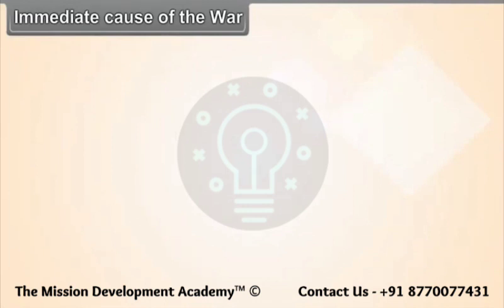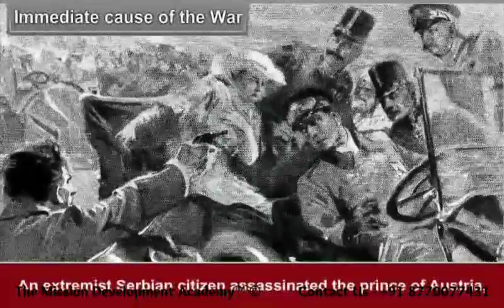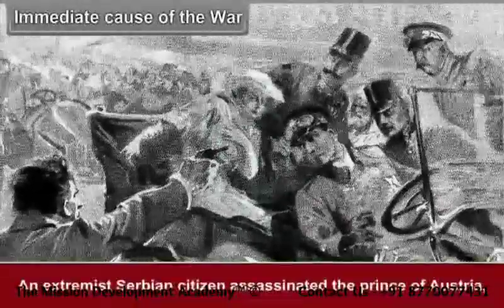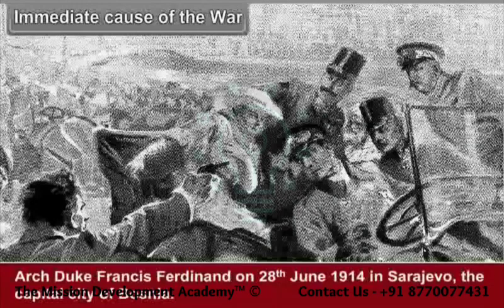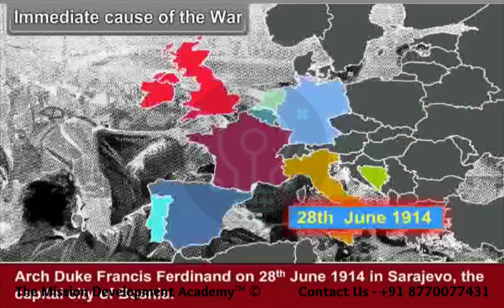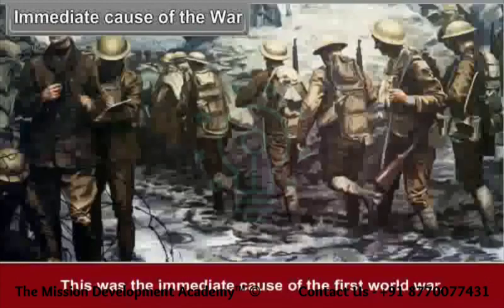Immediate cause of the war: An extremist Serbian citizen assassinated the Prince of Austria, Archduke Francis Ferdinand, on 28th June 1914 in Sarajevo, the capital city of Bosnia. This was the immediate cause of the First World War.